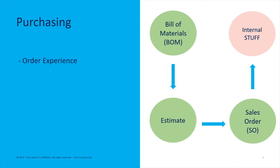So let's go back to the order experience. Once you've built your relationship with Cisco and you're working through a partner or directly, the first thing you do is generate what's called a bill of materials — a list of the items you need. Think of it as a list of PIDs, or product identifiers, which is how they're identified in the catalog. You send it off to the partner and they create a quote on how much it's going to cost.